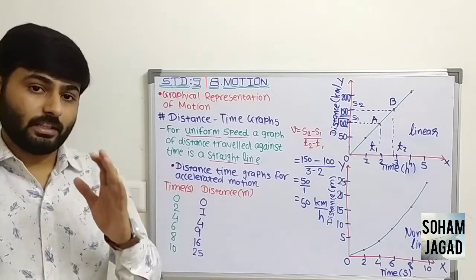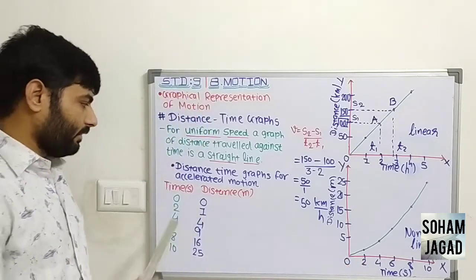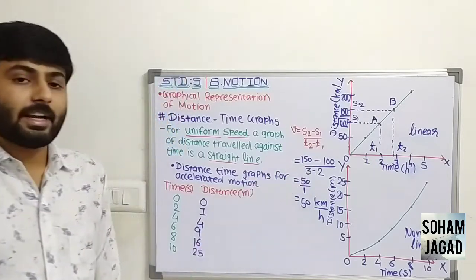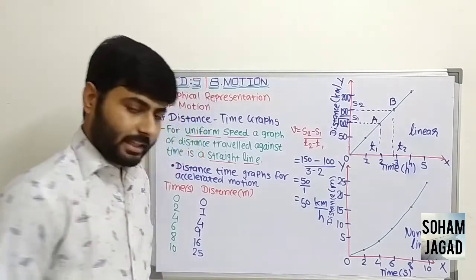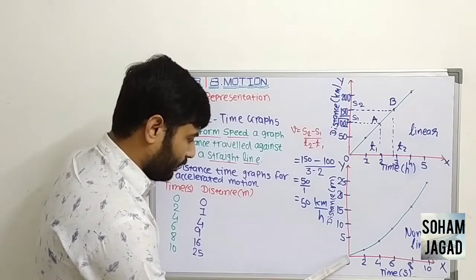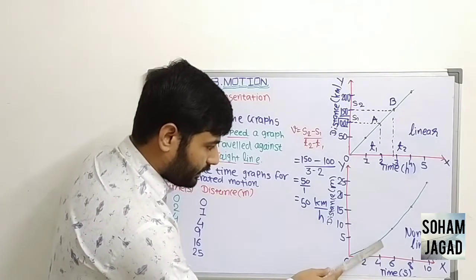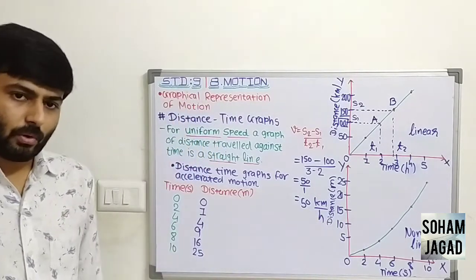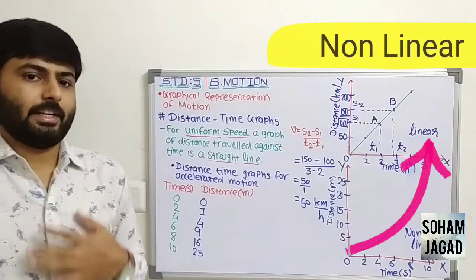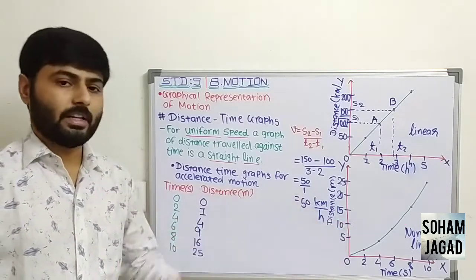Let us put this data on the graph. As usual, this is a distance versus time graph with distance on y axis and time on x axis. Plotting the points and connecting them, we get a non-linear graph, which means the graph for accelerated motion is non-linear.